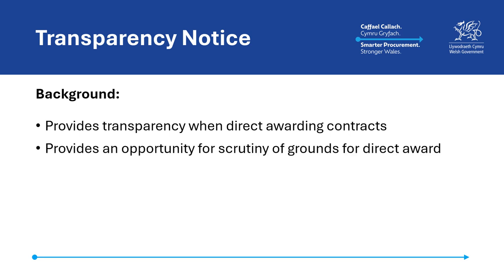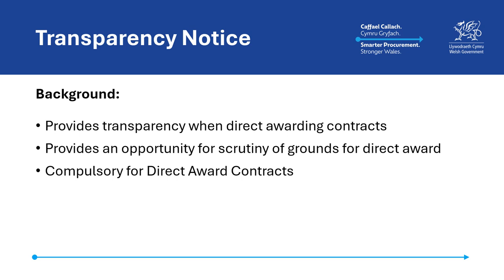It provides an opportunity for interested parties to scrutinise whether grounds for a direct award are being applied correctly. The notice is compulsory for all direct award procedures conducted under sections 41 and 43 of the Act, but is not required under section 42, which covers direct awards to protect life or for user choice contracts. A full list of direct award justifications can be found in Schedule 5 of the Procurement Act.